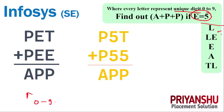The next step is we need to put some digits so that we can find the values. P is some digit, A is some digit, T is also some digit. So first of all, as you can see, 5 plus 5 is nothing but 10 — so P value is 0 and carry over is 1.